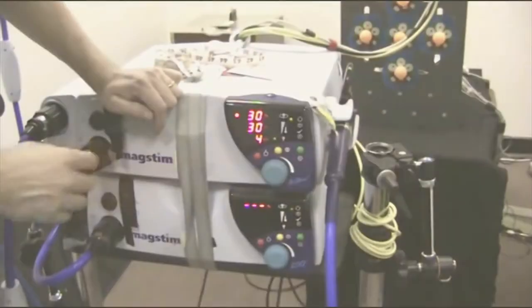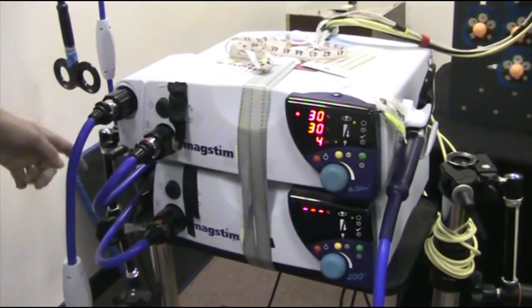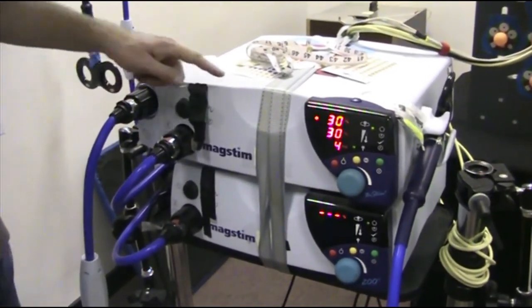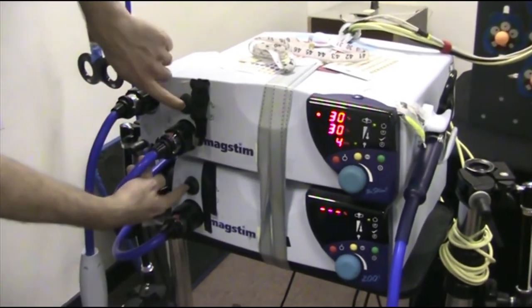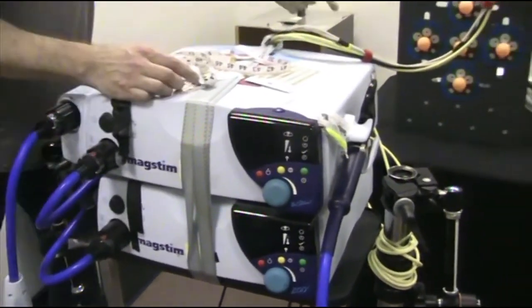If you want to move to, instead of one coil, having two coils, then you need to turn everything off, start again, and remove this coil. So let's do that. So we turn off here. And then at the back.